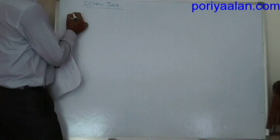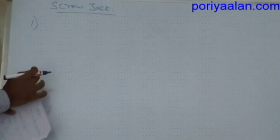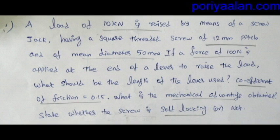Next, screw jack. Screw jack works in the same way as screw and nut. A load of 10 kN is raised by means of a screw jack having a screw thread of 12 mm pitch and mean diameter 50 mm. If a force of 100 N is applied at the end of a lever to raise the load, what should be the length of the lever used? The coefficient of friction is 0.15. What is the mechanical advantage? State whether the screw is self-locking or not.